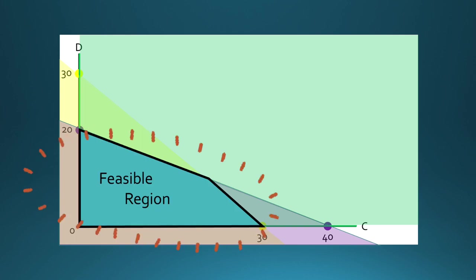The extreme points in this region are 0,0, 40,0, 0,20, 30,0, and the intersection of pounding and stirring, which is what we are going to find out. Let us use the elimination method to find the intersection.